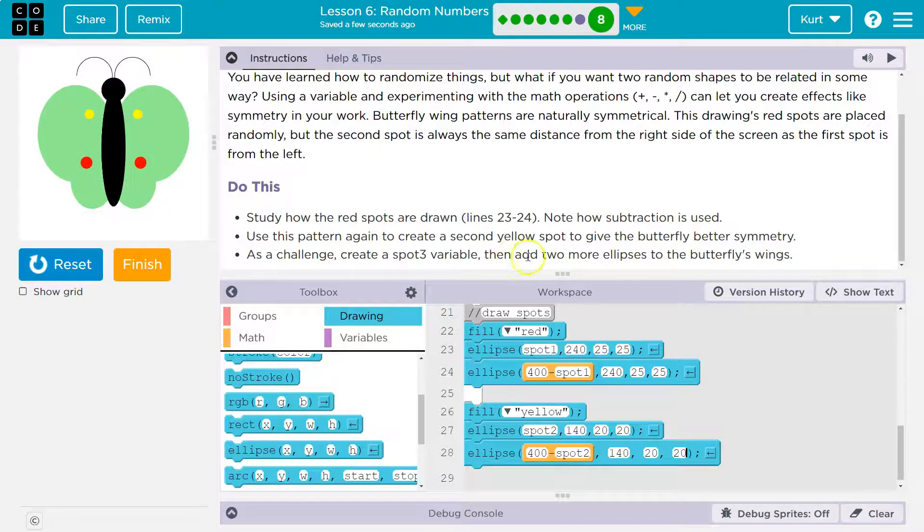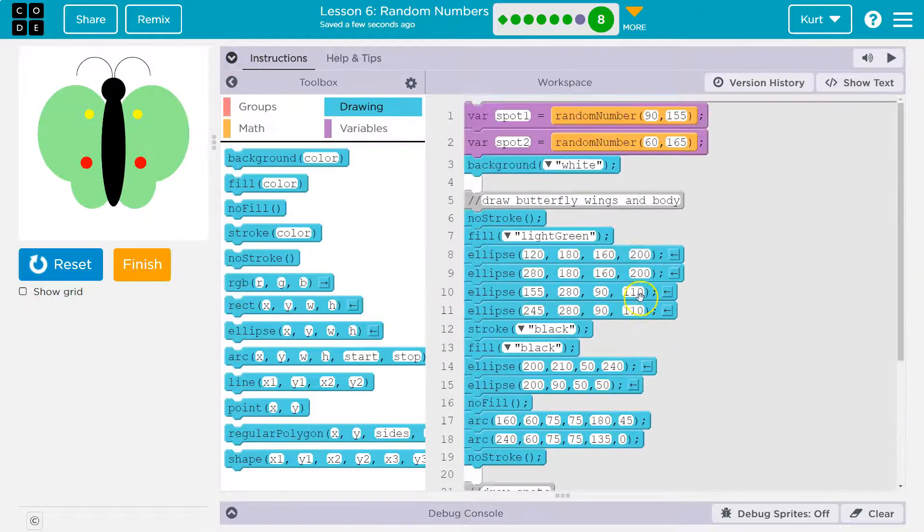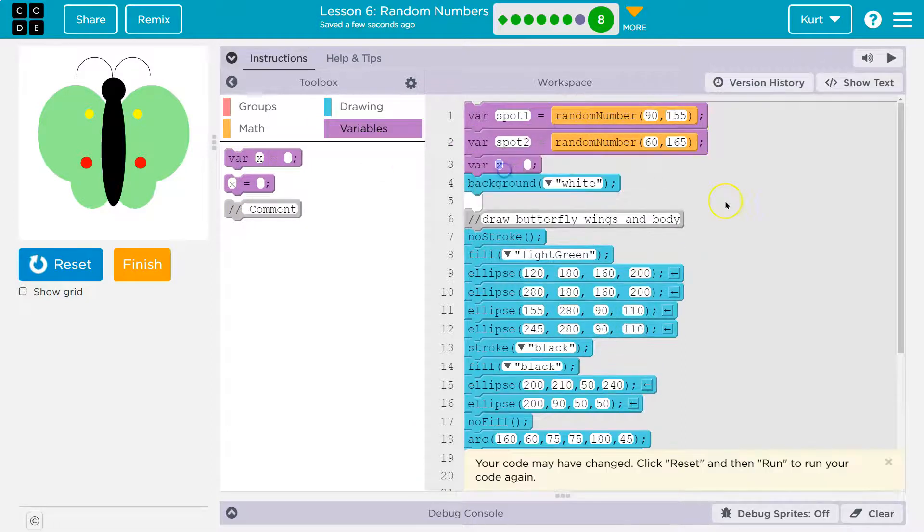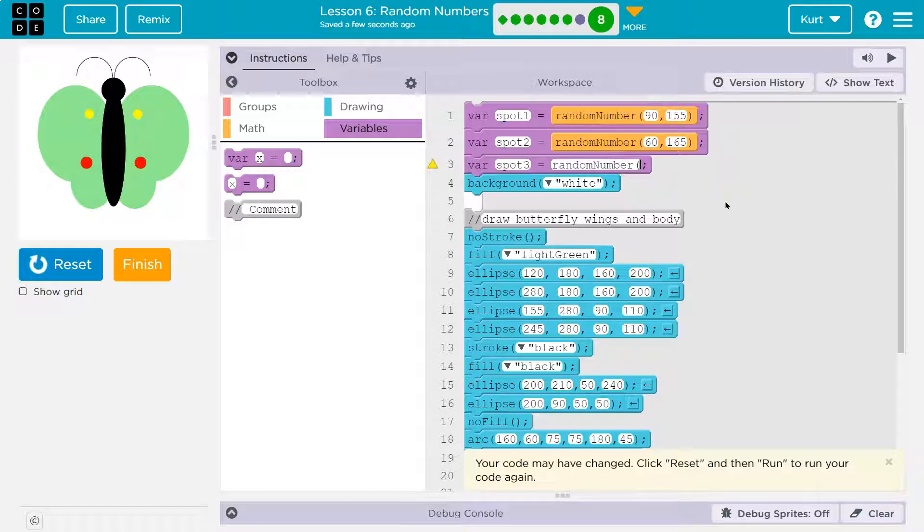Okay. As a challenge, create a third variable, then add two more ellipses. Cool, we can definitely do that. So we already know how they're doing this. So I'm going to just grab a variable and, shockingly, name it spot three. And then I'm going to do random number, just like they have. I'm just typing it.